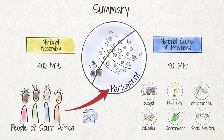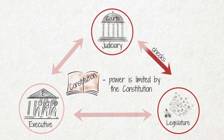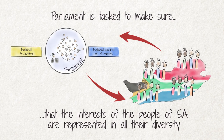In summary, the legislature is the representative of the people of South Africa. The 400 plus 90 representatives are given their mandates through regular elections and vote on issues of national importance in parliament. Parliament is responsible for passing laws and for holding the executive branch of government accountable. The power of parliament is limited by the constitution, and the judiciary checks the exercise of power by the legislature. Through its work, parliament is tasked to make sure that the interests of the people of South Africa are represented in all their diversity.